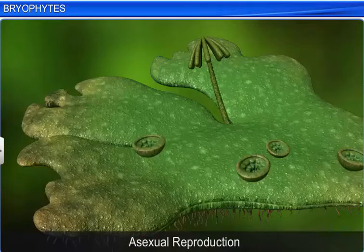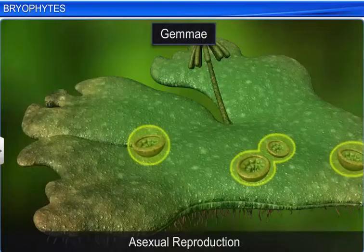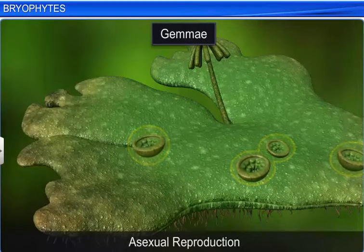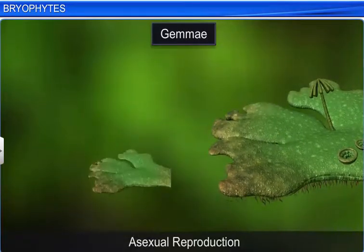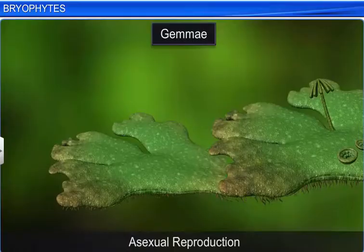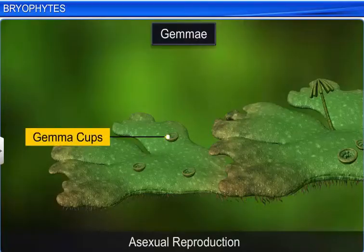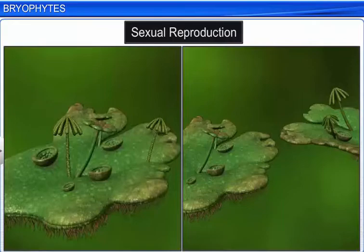Asexual reproduction also occurs when gemmae are formed. They are green, multicellular, asexual buds that separate from the parent and develop into new individuals. They develop in small receptacles called gemma cups, located on the thallus. In the case of sexual reproduction, the male and female sex organs are produced either on the same or on different thallus.